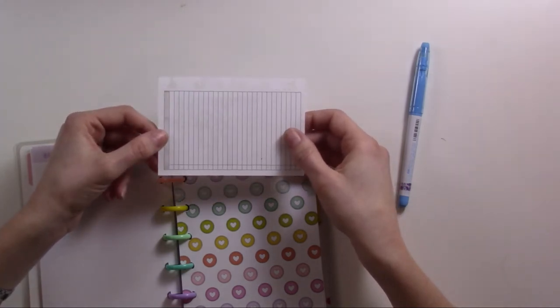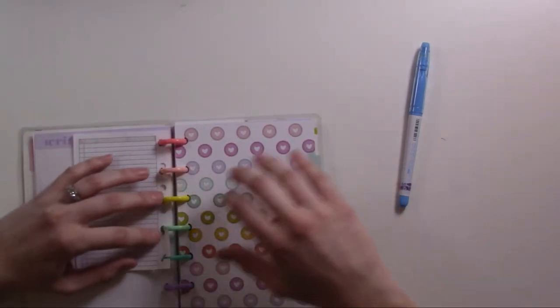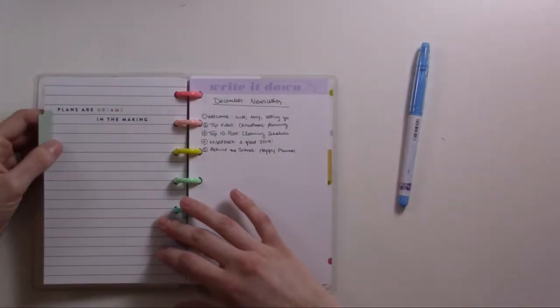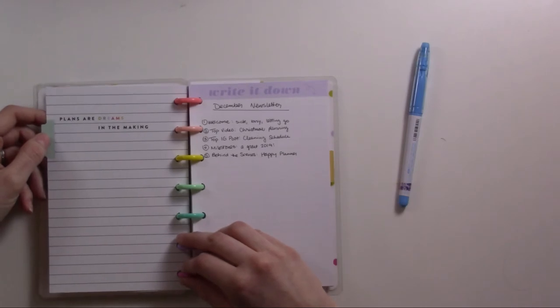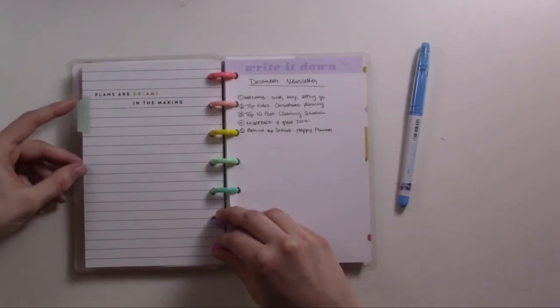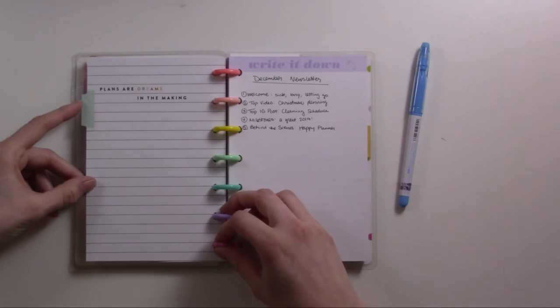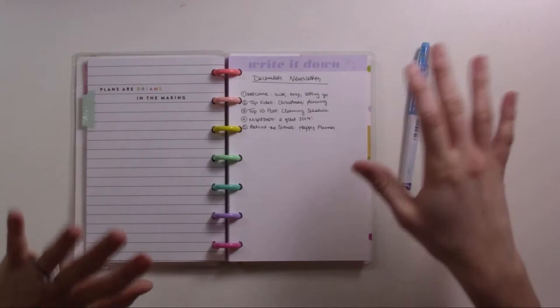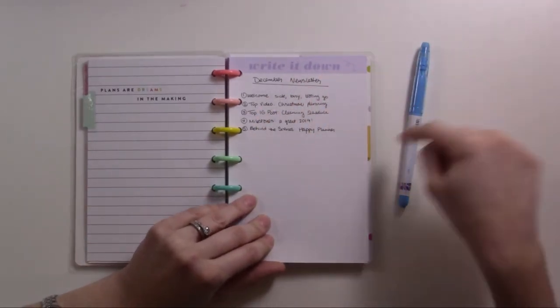I think having some of these inserts that are for the whole year might help with that as well because I can just keep going in the next month when I'm ready. Then a page where I will put my video ideas. I also haven't migrated those yet, but those are on this insert here that I just took straight out of my pocket planner and punched it with the Mambi punch.